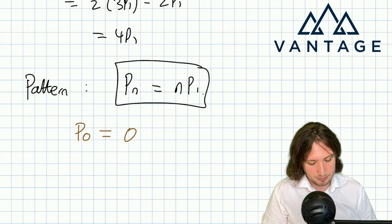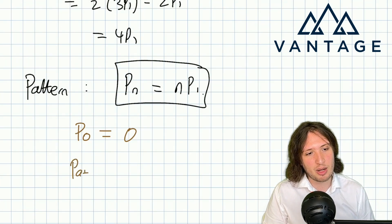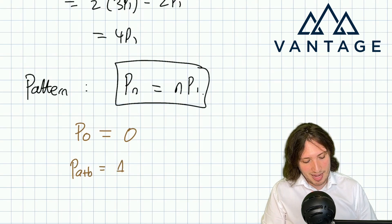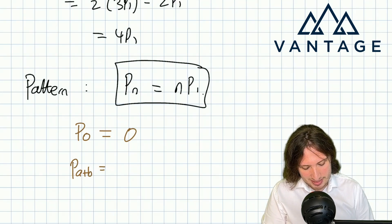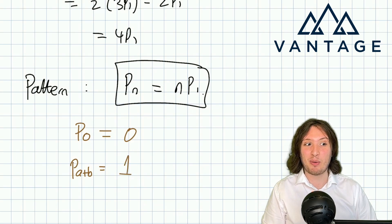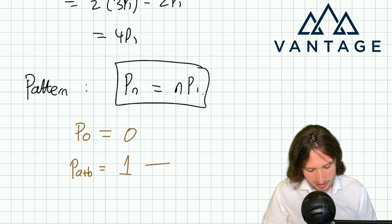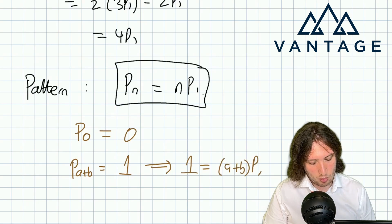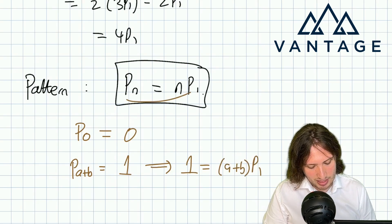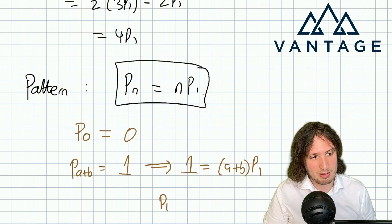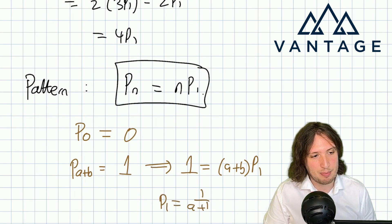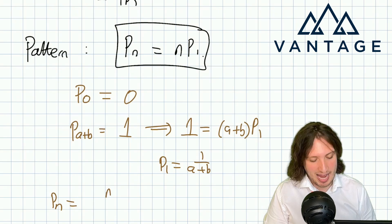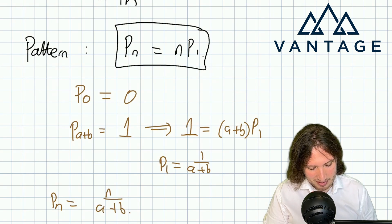But I also know that P_{a+b} = 1 because if Alice has a+b points she's already got all the points and she's already won. So that means that 1 = (a+b)P_1, where I've plugged n equals a+b in there. That means that P_1 is 1/(a+b), and so P_n is n/(a+b).